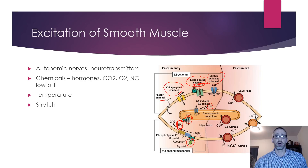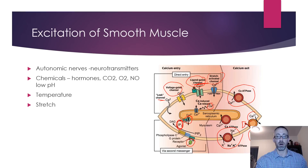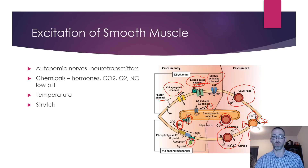To remove calcium from the cytoplasm once it has accumulated: it can be pumped out to the ECF using a calcium ATPase, or via the sodium-calcium exchanger — since sodium is at high concentration in the ECF thanks to the sodium-potassium pump, sodium moves down its gradient into the cell and the energy from that gradient is used to pump calcium out against its gradient. Finally, a calcium ATPase on the sarcoplasmic reticulum pumps calcium back into the SR.